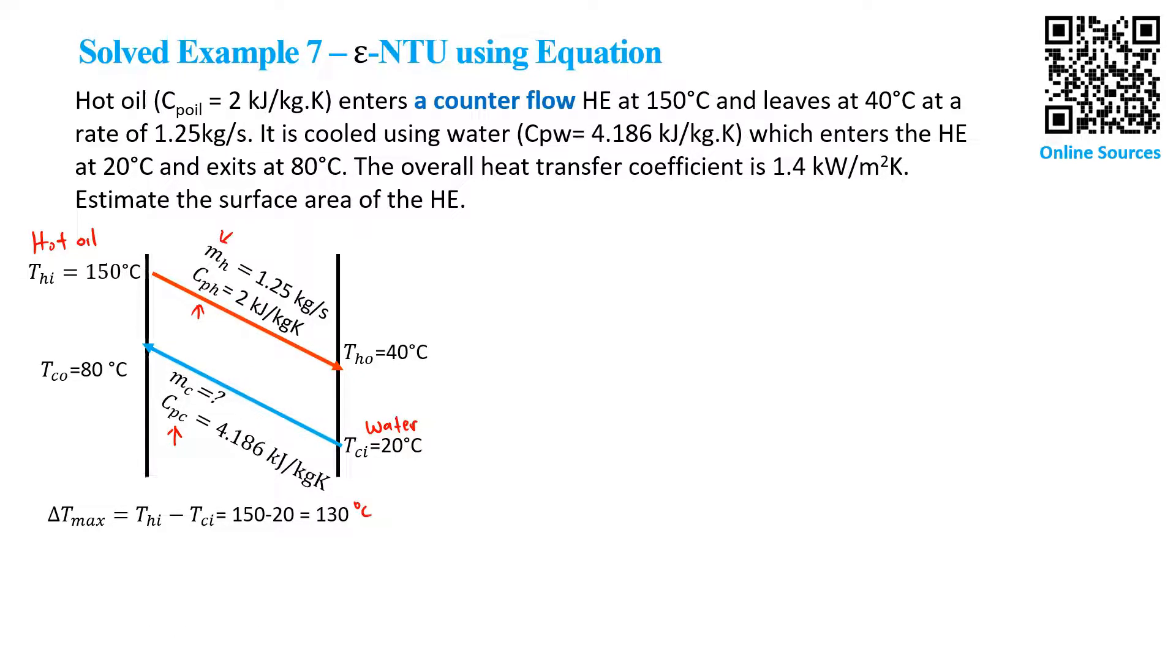Next, we need to find the stream capacity rate of the hot fluid, CH, which equals CPH times the mass flow rate of the hot stream. We find CH = 2.5 kW/K.